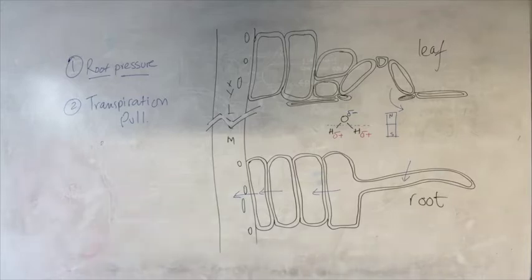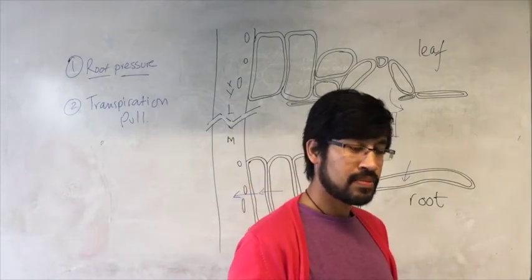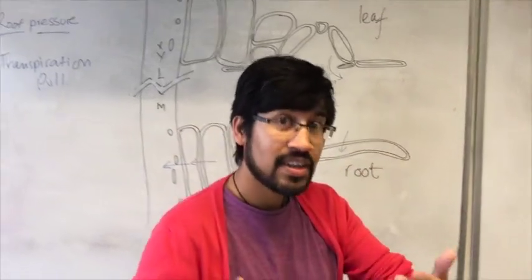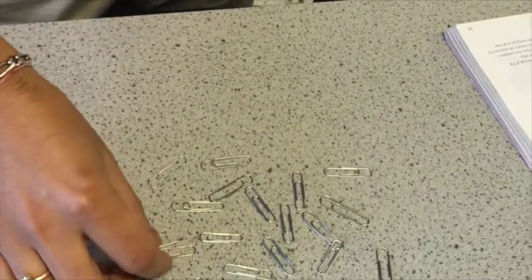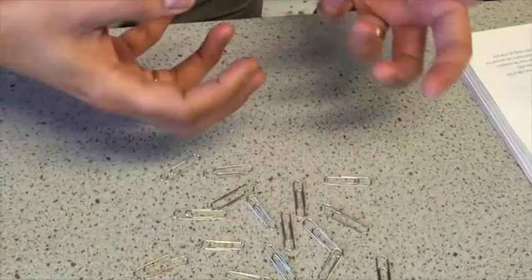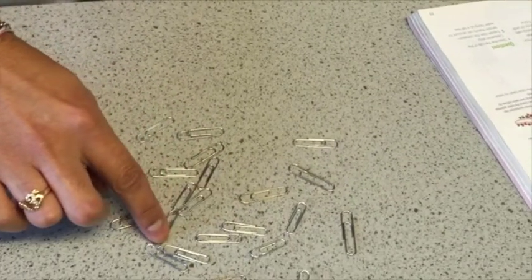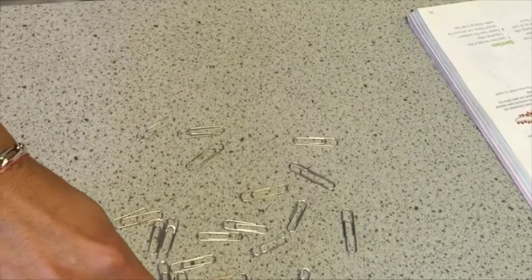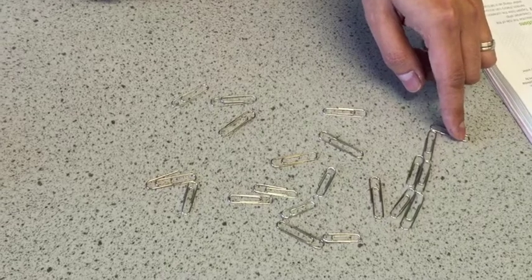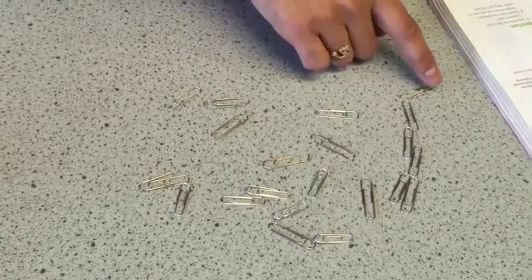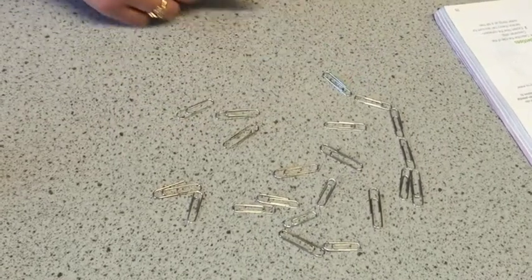Let me show you what I mean with a little demonstration. I've got some magnetized paper clips. What I'm hoping to show you is that if they're all slightly positively charged at one end and slightly negatively charged at the other, what can happen is that as you move one, others start to follow. I'm moving one, but because of the attraction between the molecules, the other ones are following. That's what we mean by the transpiration pull — if one of them is being lost to the atmosphere, other ones are pulled along with it.